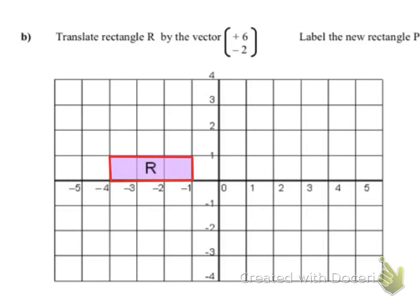Here's the first question and it's at foundation level. It's to translate the rectangle R via the vector plus 6 and minus 2. I've got my able assistant here today and she is going to have a go at translating it across.